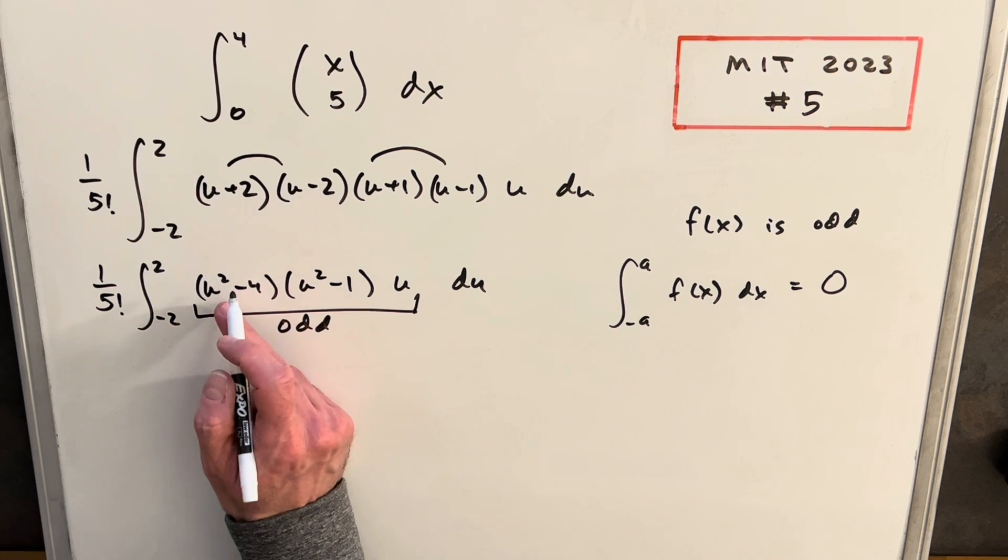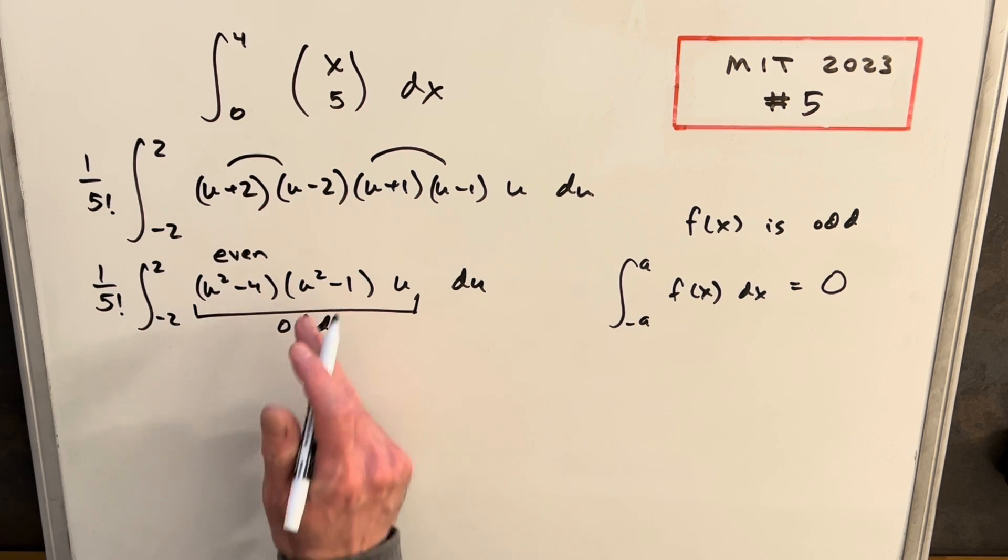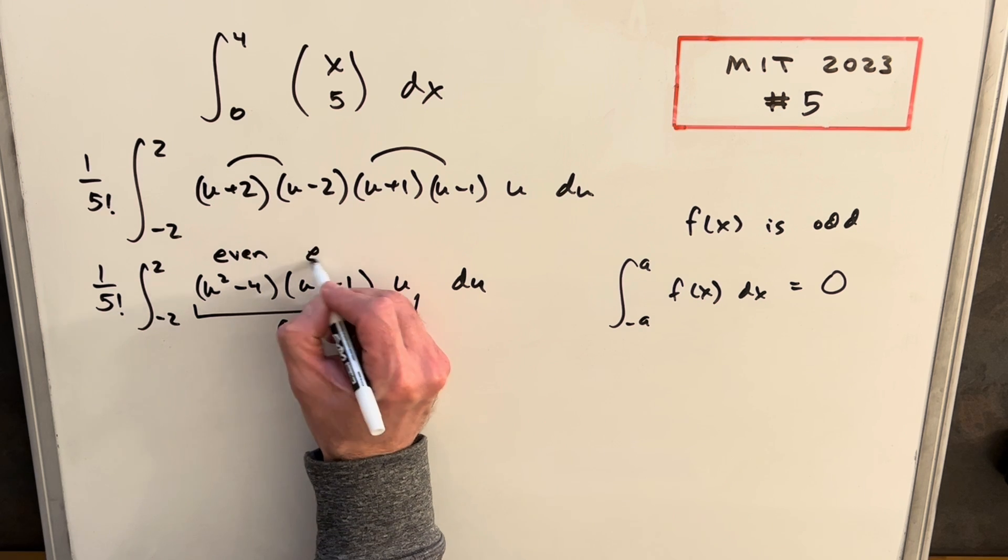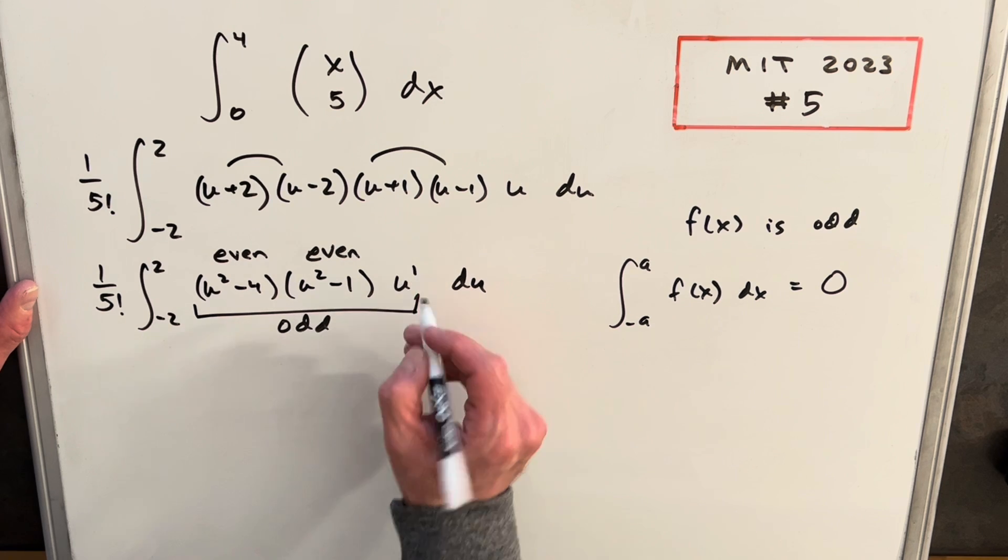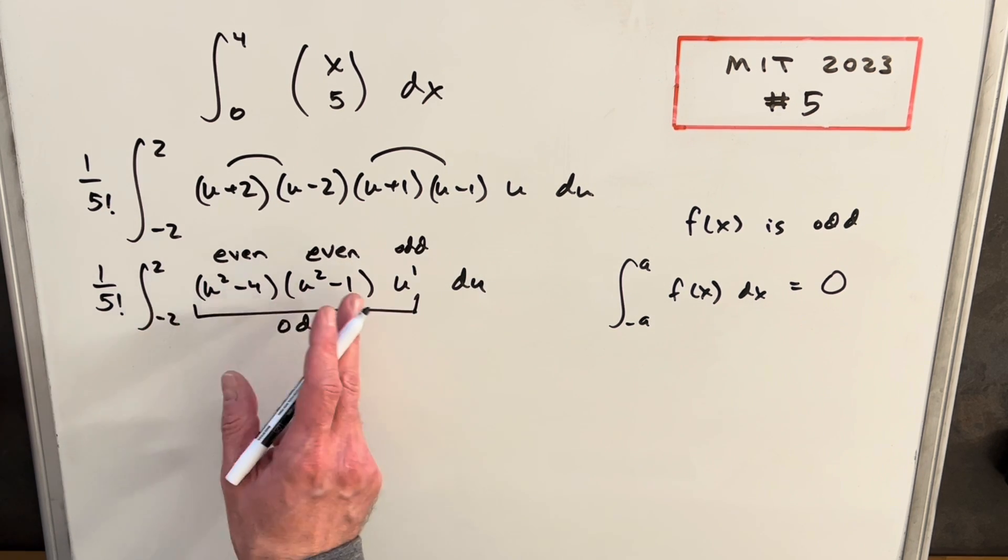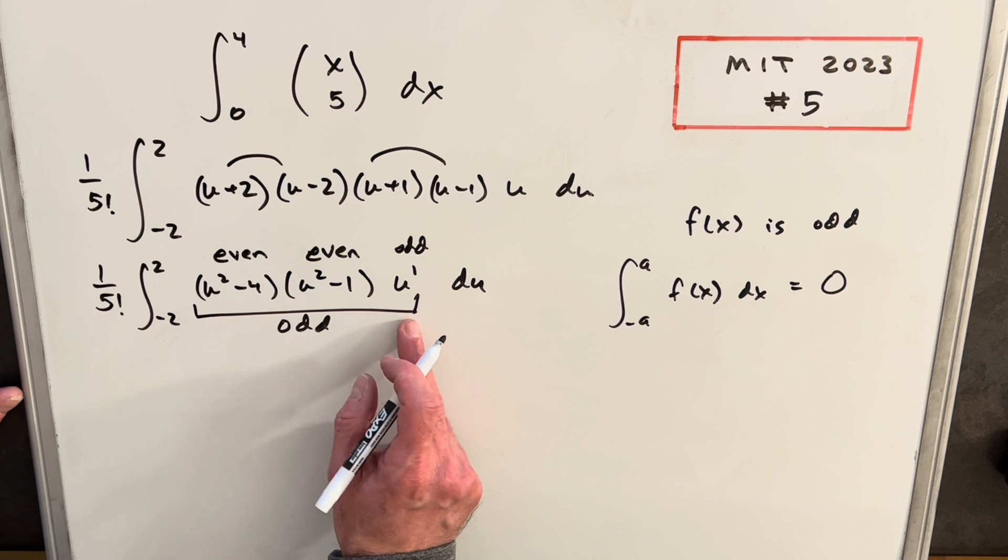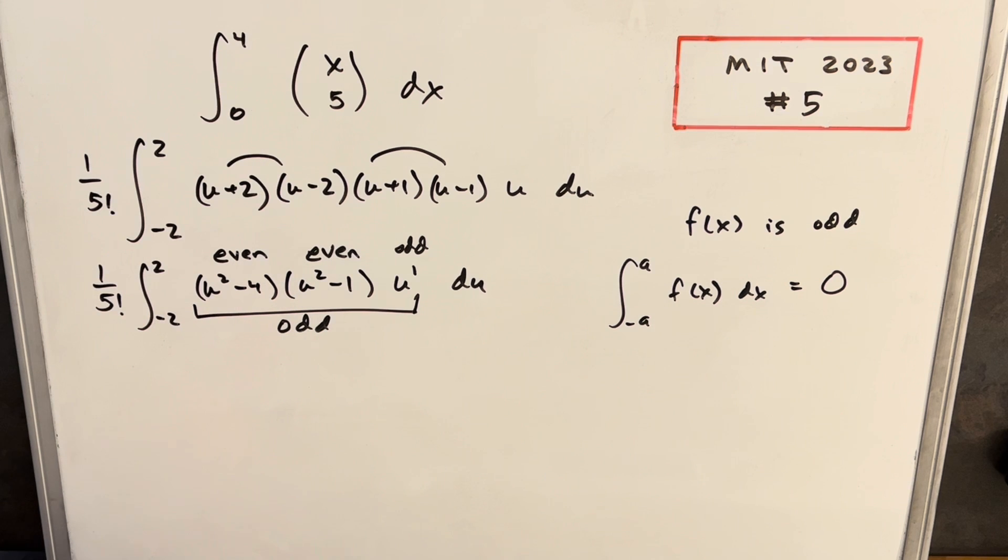Now the thing to notice is we have a square term here. So this term is even. Similar here, this term is also going to be even. And then on this u term, we can look at this as a 1 and odd power. So this term is odd. And multiplying, we can multiply however many even functions we want. If we have one odd function, the whole thing is going to be odd. Let me just show this in a little more detail so it's clear.